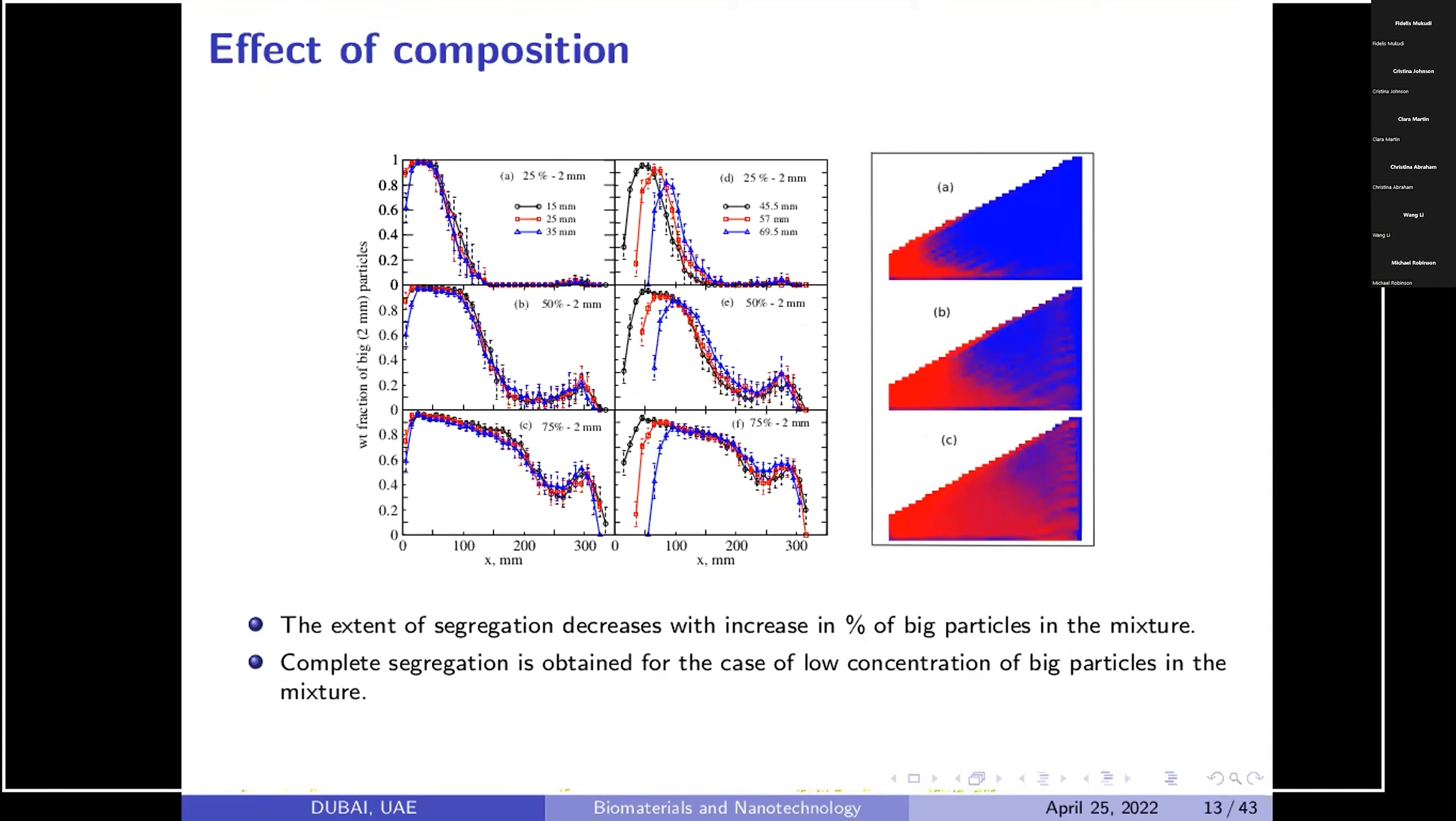After we repeated each experiment almost eight times, then we have taken a standard deviation over eight experiments. You can see when you have different percentage of particle, I will just explain one of these results which is nicely seen on the right hand side. You can see the blue part indicates the small particles, the red part indicates large particles.